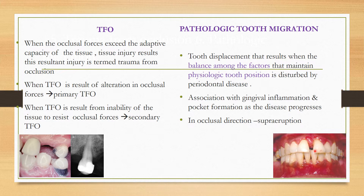In the occlusal direction, it leads to supraeruption. The tooth can migrate to the mesial or distal side, and in supraeruption cases it will get supraerupted. You can see in this picture that tooth 21 got supraerupted due to pathological migration.